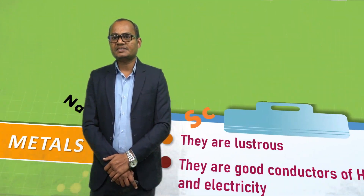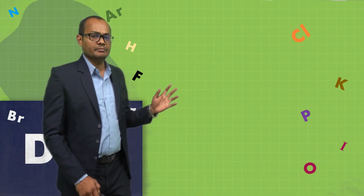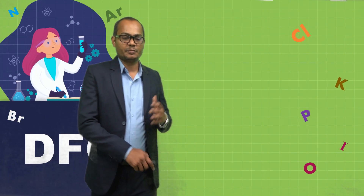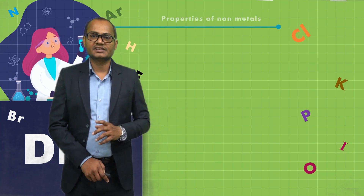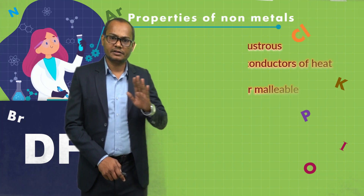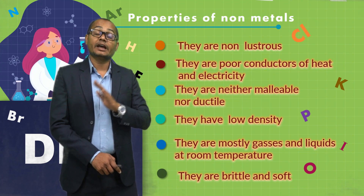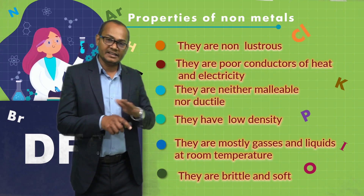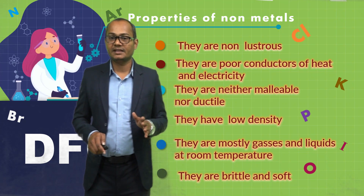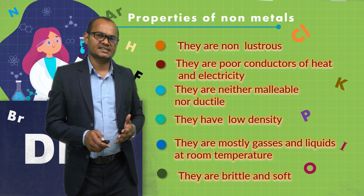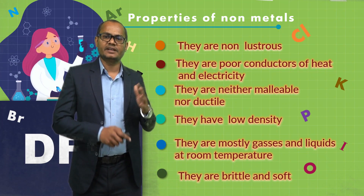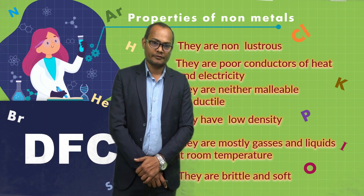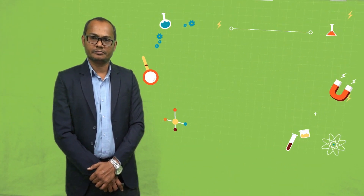Now if you look at the properties of non-metals and compare them with metals, non-metals are non-lustrous. They are poor conductors of heat and electricity. They are neither malleable nor ductile. They are mostly gases and liquids at room temperature. They are brittle and soft. So these were the properties of non-metals.